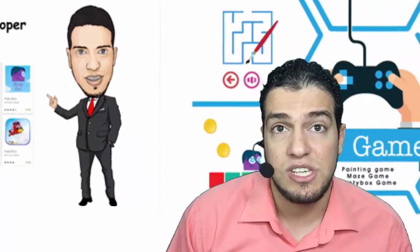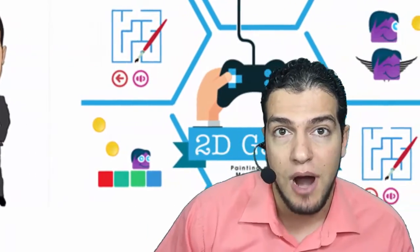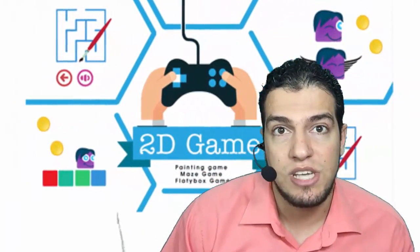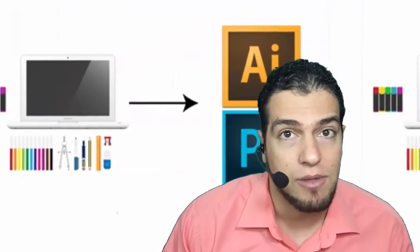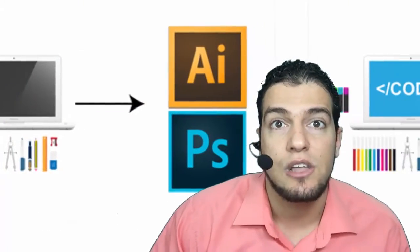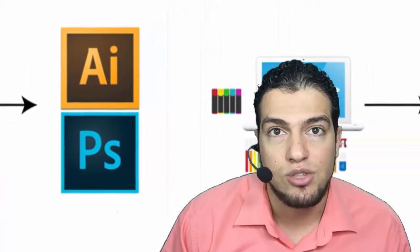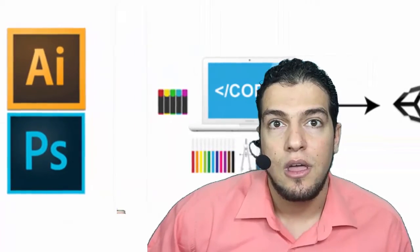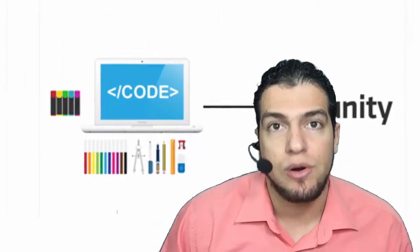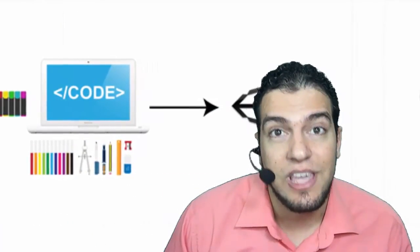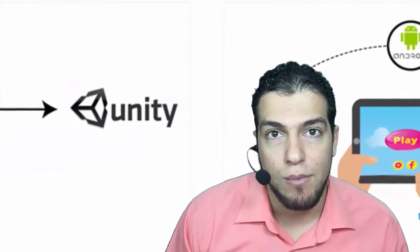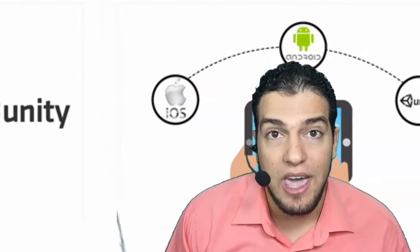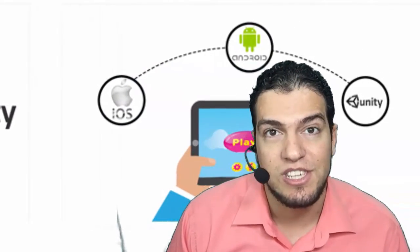In this course, which is a 100% complete project-based process to design a complete 2D game, we're going to start from the design of the game in Photoshop, to developing the game in Unity, to publishing the game to the iOS Store, Google Android Play Store, and the Unity Asset Store — with a complete guide for App Promotion, Monetization, and In-App Purchase Integration.